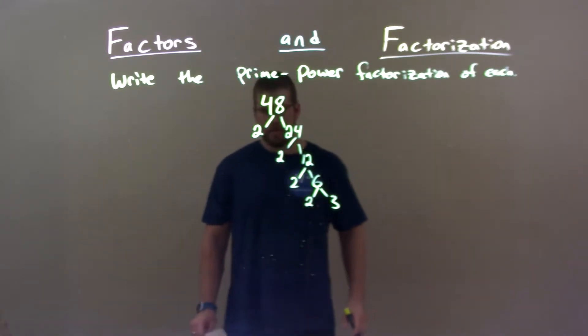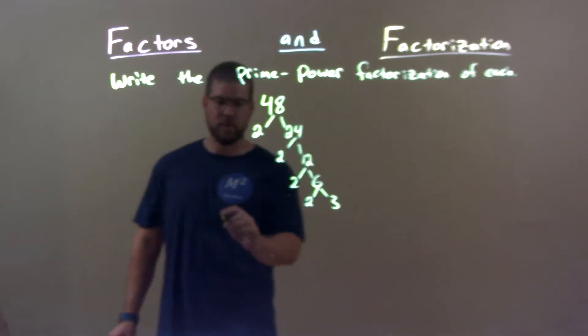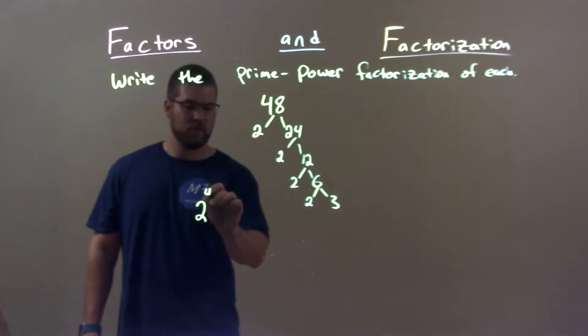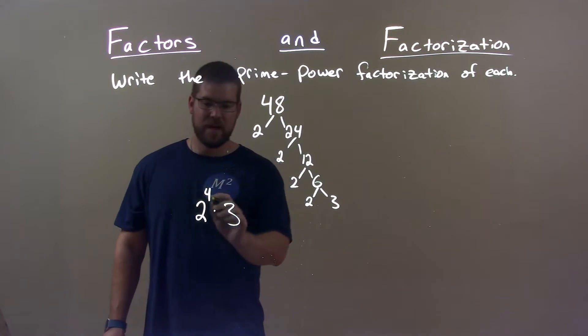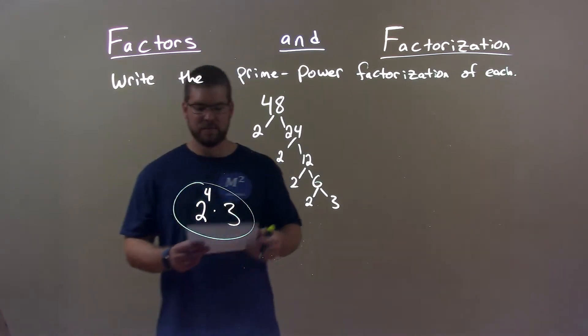Now we have all of our prime numbers. So we have four 2's. So when I write this out, it's 2 to the 4th power times 3. And that encompasses everything, and that is just our final answer.